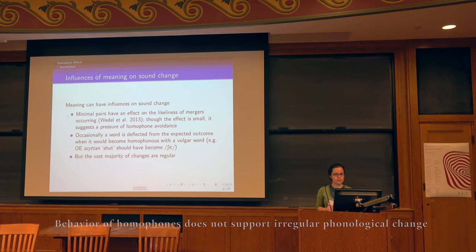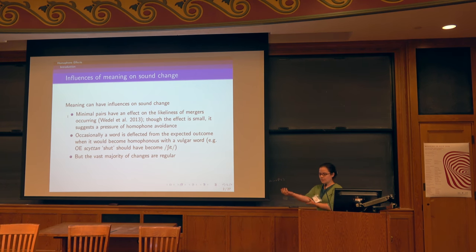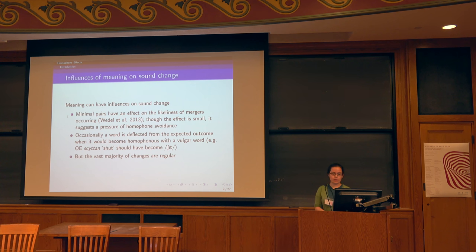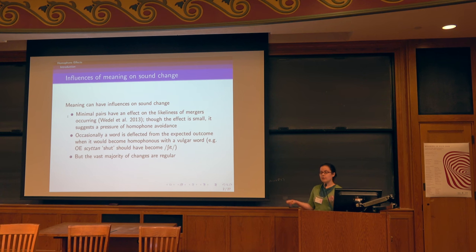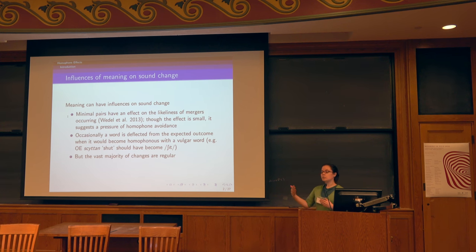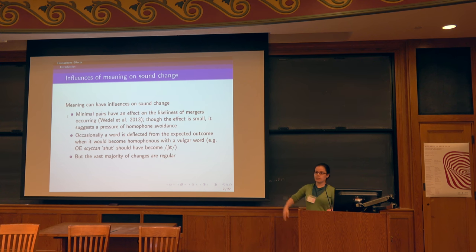I'm going to tell you a little bit about homophones, about sound change, and to what extent we have expectations about interactions, because meaning can influence sound changes. When a language has more minimal pairs that depend on a particular contrast, mergers resulting in homophones are less likely. It's a fairly small effect — you can still get the merger, but there's pressure against creating homophones. These are still regular sound changes, just with differing likelihood, like the cot-caught merger in many dialects of English.